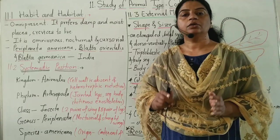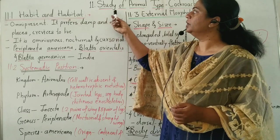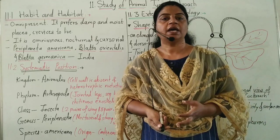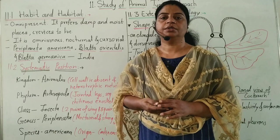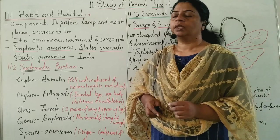Hello students. Here we will see the next chapter, chapter 11: study of animal type cockroach. In the last lecture we completed chapter number 4, Kingdom Animalia. The first point of this chapter is habit and habitat.